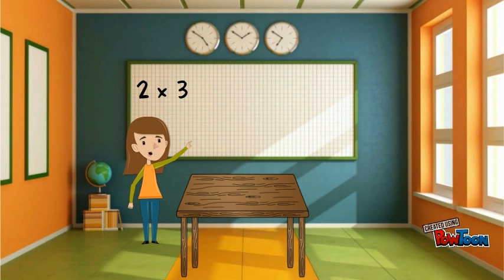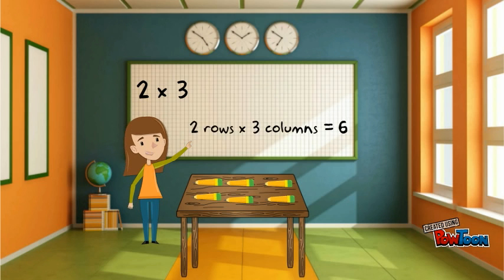How can we use an array to represent two times three? We can use two rows of pencils and three columns of pencils. Two rows times three columns equals six. Two times three equals six. There are six pencils in the array. One, two, three.